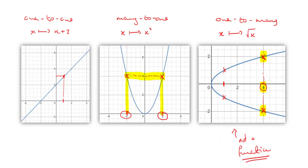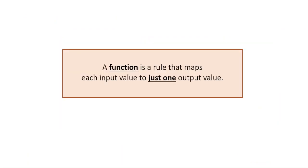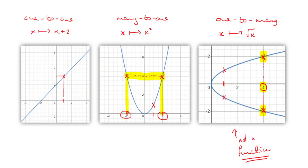The other two mappings are fine. The one-to-one mapping has one input going to one output, so that's a function. For the many-to-one mapping, if you take one input — say positive 1 — there is only one output, so that is also a function. To clarify: a function is a rule that maps each input value to just one output value, meaning one-to-many mappings are not functions. I hope that was helpful — you may need to watch it a couple of times. See you next time!